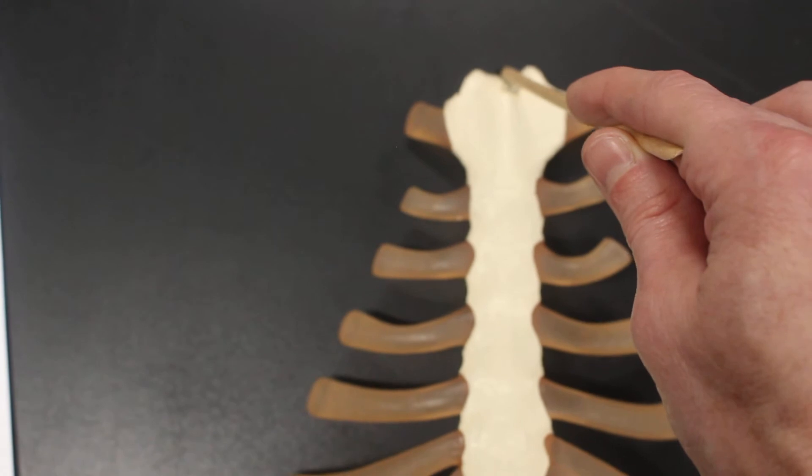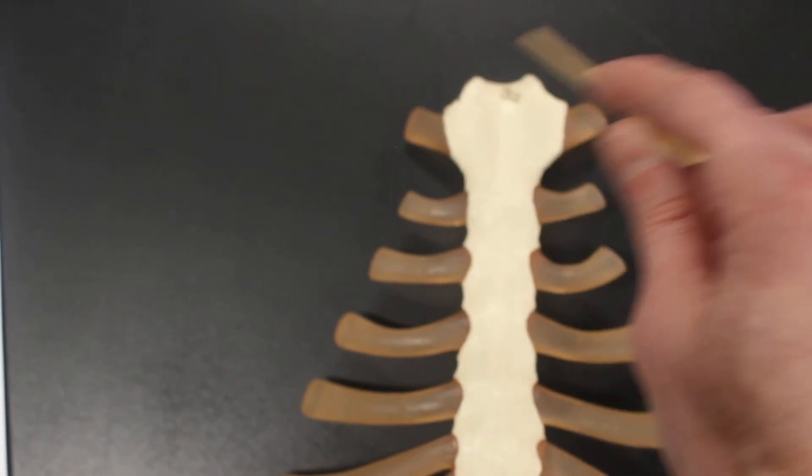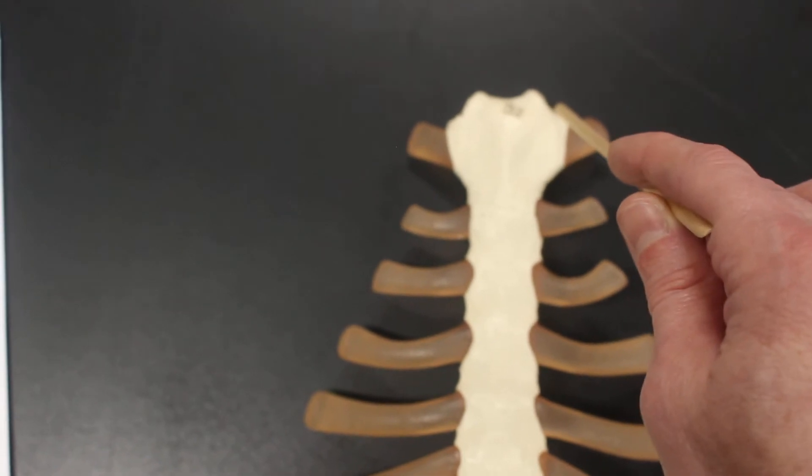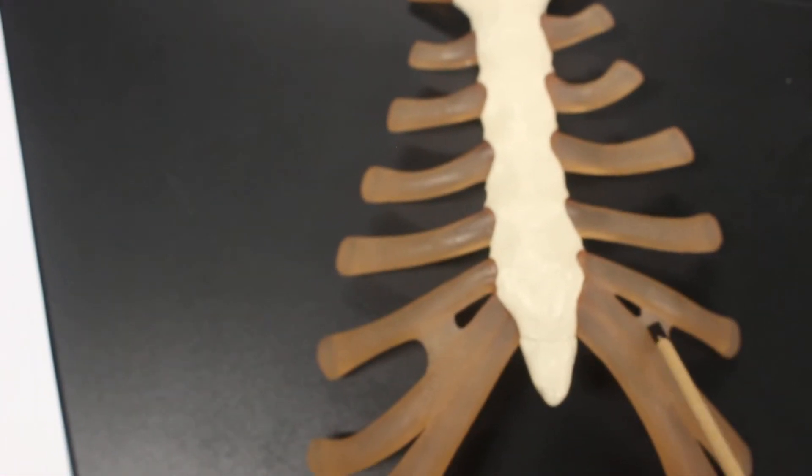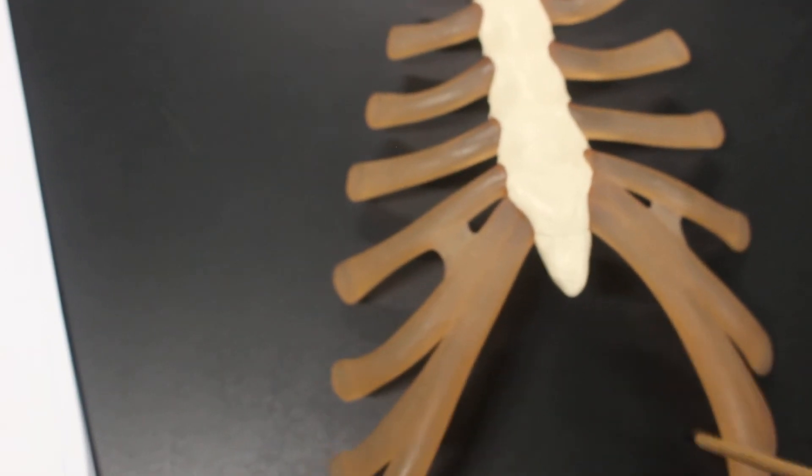On the manubrium, we have the suprasternal notch and then on the sides are the clavicular notches. This is all costal cartilage that attaches to the ribs, including the edge here, which would be the costal margin.